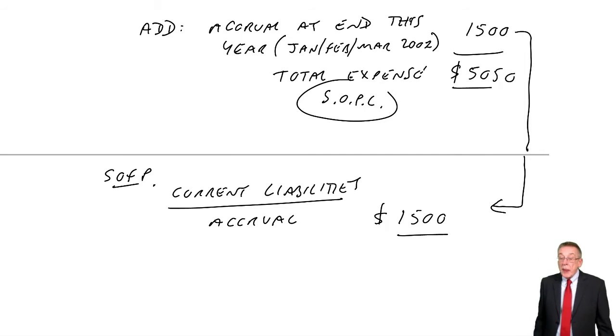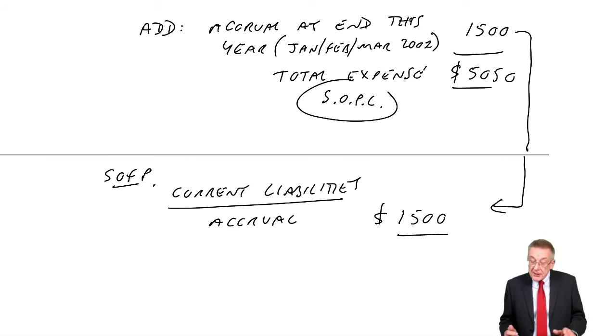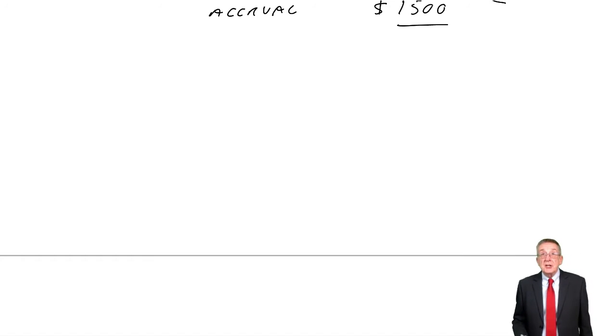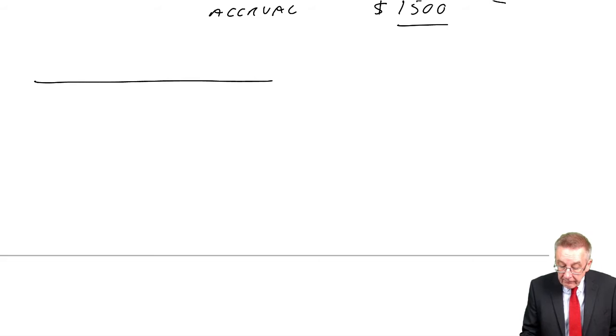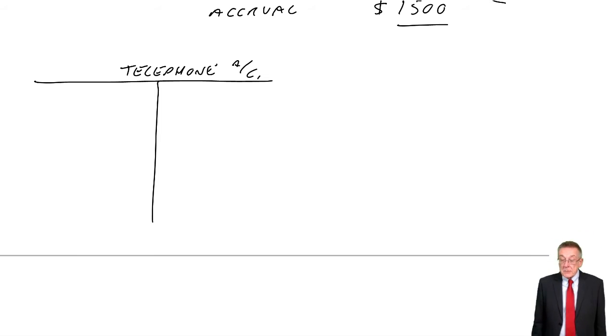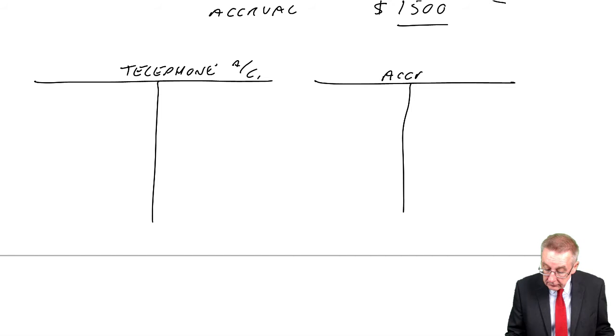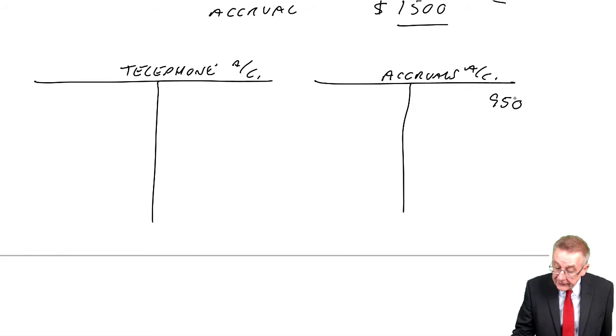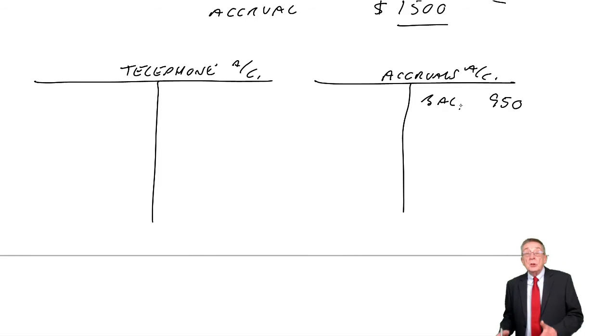And there we are. Well, for the very, very last time, that's almost certainly what we needed in the exam, just the figures. But just to be safe, let's again redo it in the T-accounts, playing bookkeeper, playing accountant. And so, now, remember, we're carrying on from last year. If you look back at the end of last year, we had a telephone account, but the balance at the end of last year was zero. We start this year with a balance of zero. At the end of last year, we also had an accruals account. And at the end of last year, we had a credit balance of 950. It was the amount owing for the accrual at the end of last year.